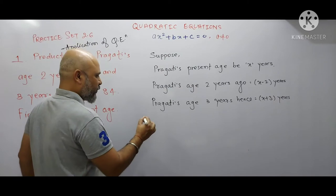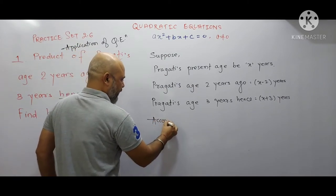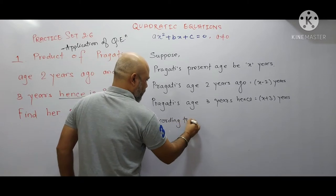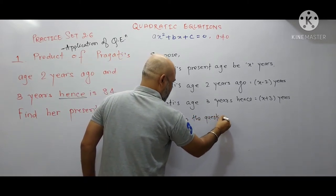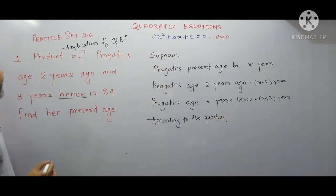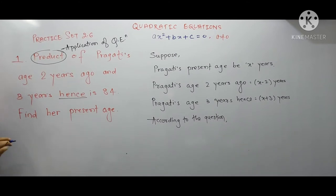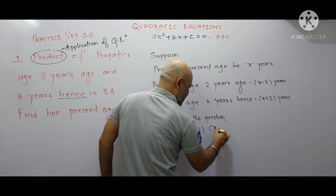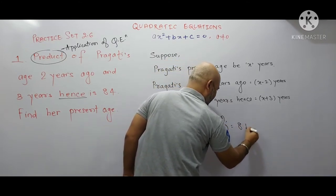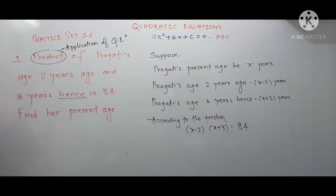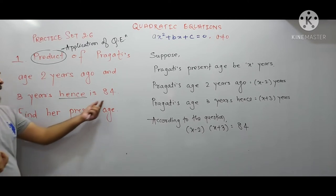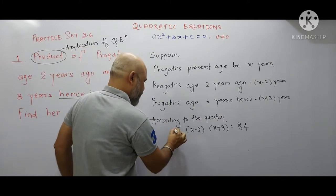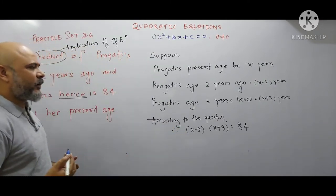According to the question, the product of Prakriti's age two years ago and three years hence is 84. So product means multiplication: two years ago Prakriti's age is x minus 2, and three years hence is x plus 3, and this product is given to be 84.